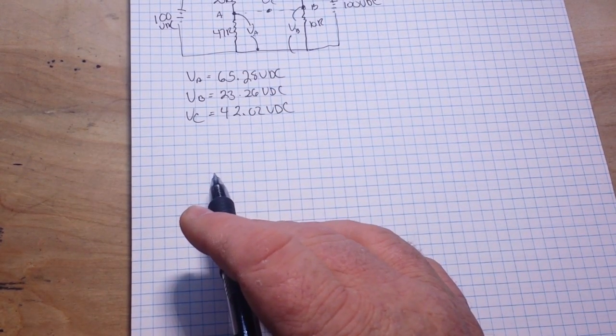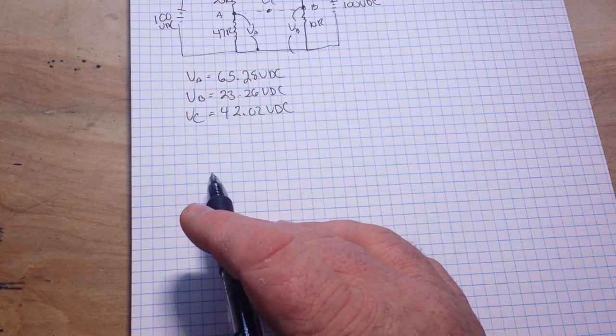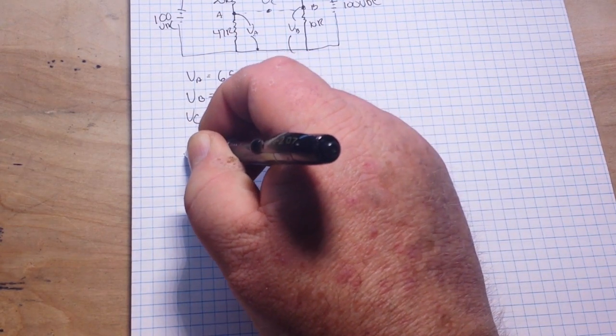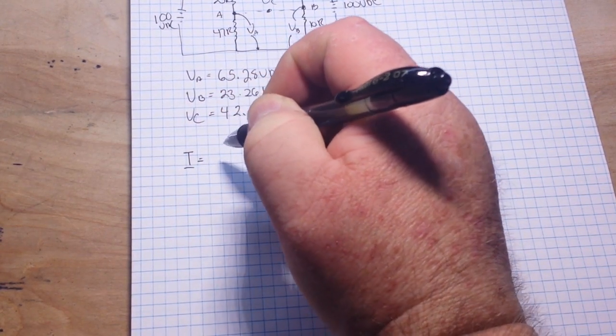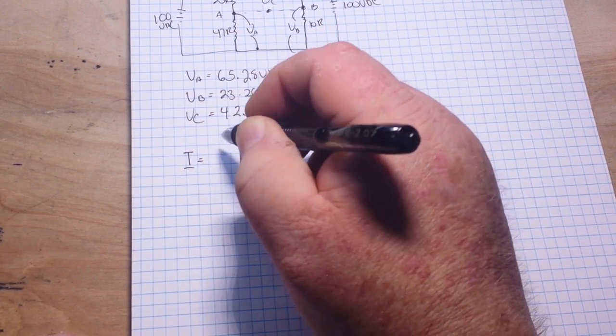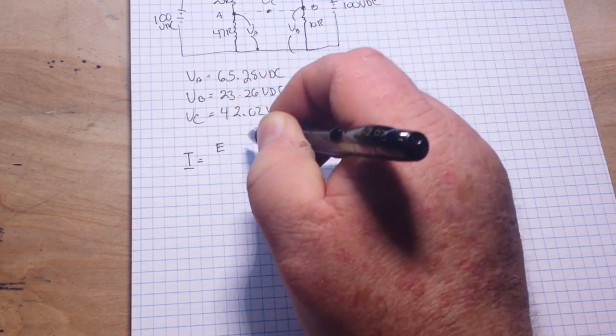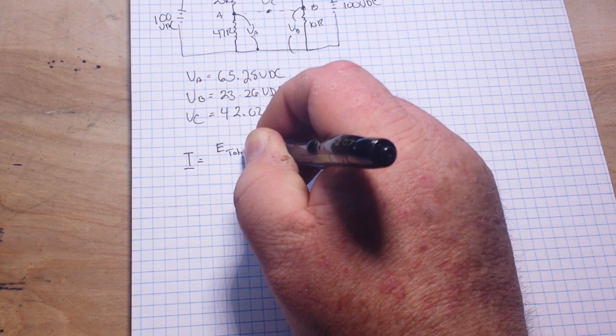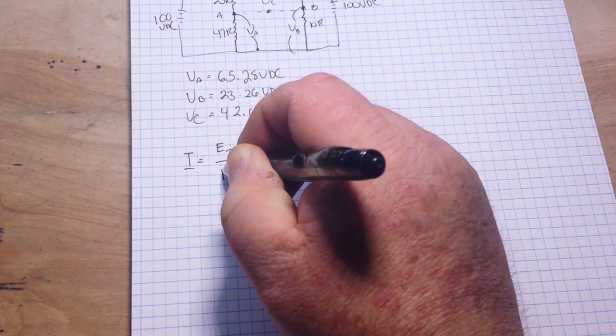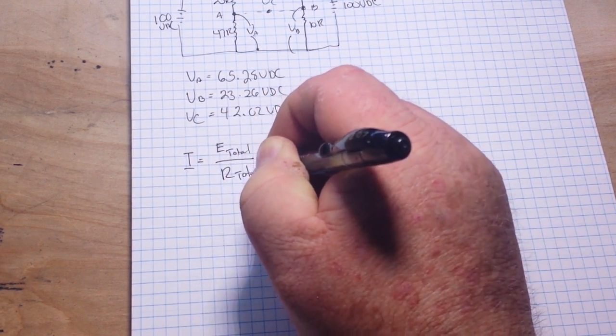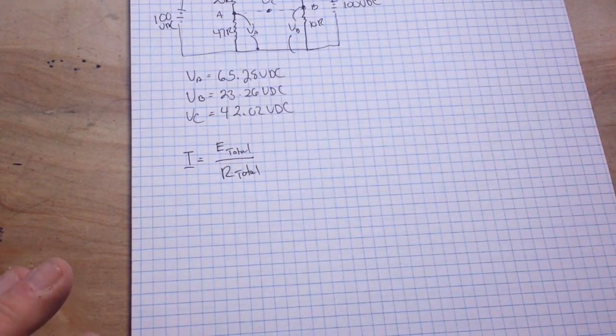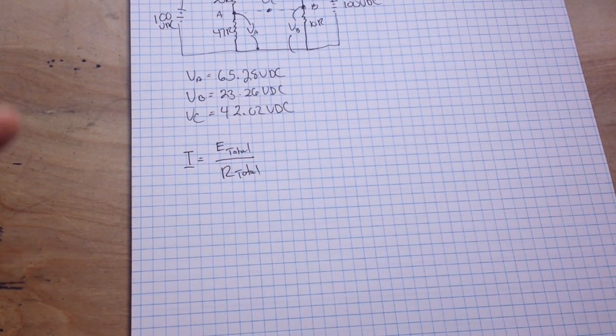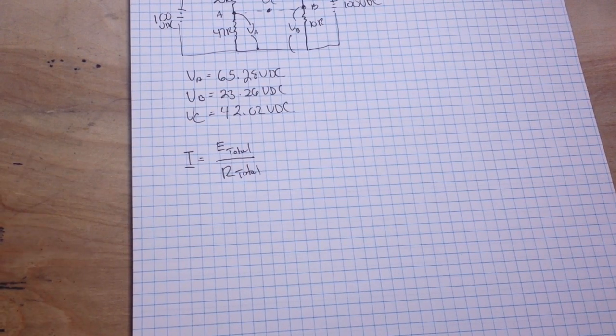Okay, next up, we know that the current in a series circuit, I, is, according to Ohm's Law, we'll say E total, right, over R total. Basically, I equals E divided by R. But we're just going to go total because we're talking about a series circuit here.